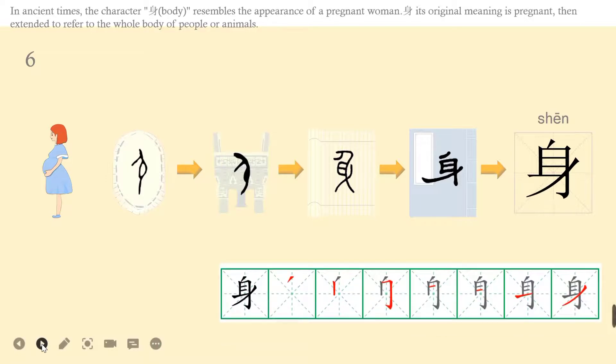Let's learn how to write. Shēn has seven strokes. The first stroke: piě. The second stroke: shù. The third stroke: héngzhégōu. The fourth stroke: héng. The fifth one: héng. The sixth one: héng. And the last one is: nà.